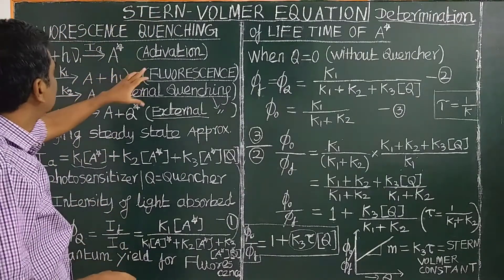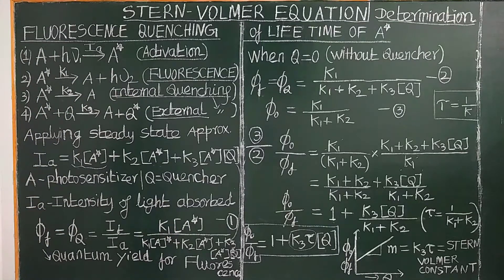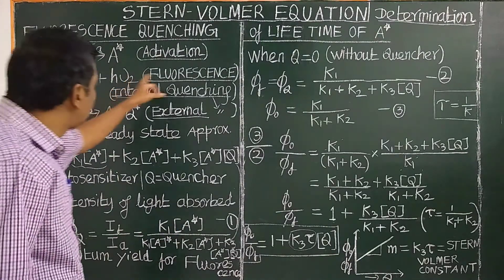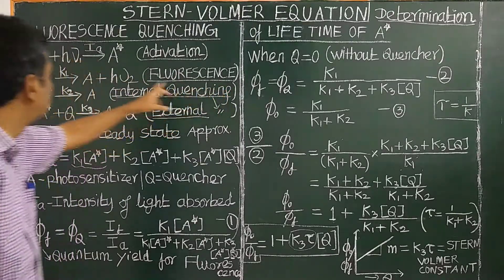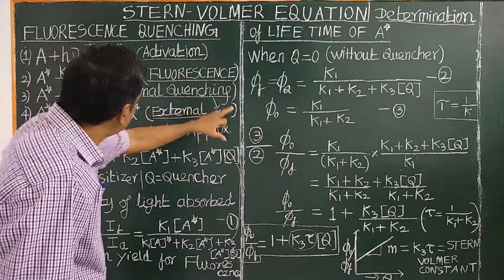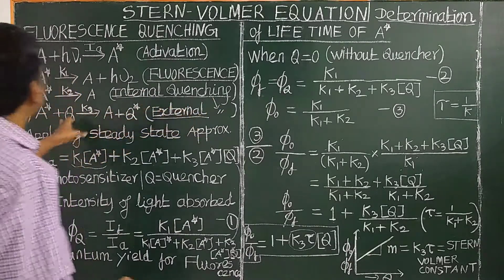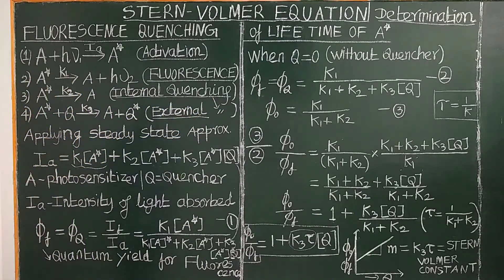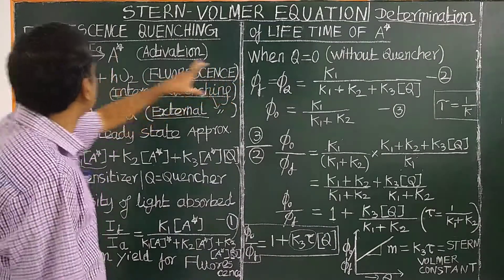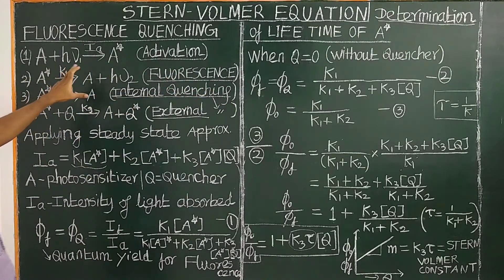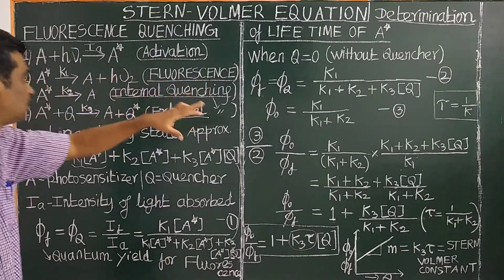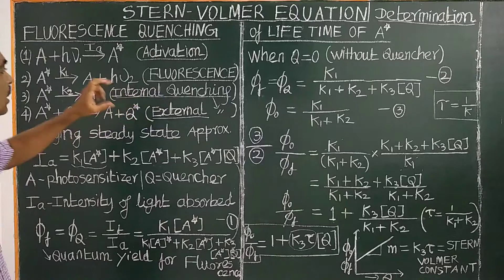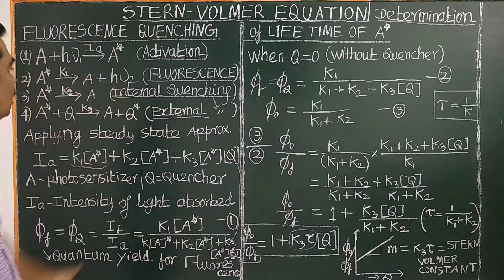From the excited state it can decay through the fluorescence process, or through the internal quenching process, or in the presence of an external quencher Q. K1 is the rate constant for fluorescence decay, K2 is the rate constant for the internal quenching process, and K3 is the rate constant for the external quenching process.